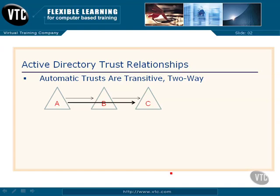So if A is trying to work in C, or if C is trying to work in A, we don't have to manually or explicitly set up a trust between A and C. It's already there as a result of these two trusts being transitive — which means if you can find a path and everybody trusts everybody.